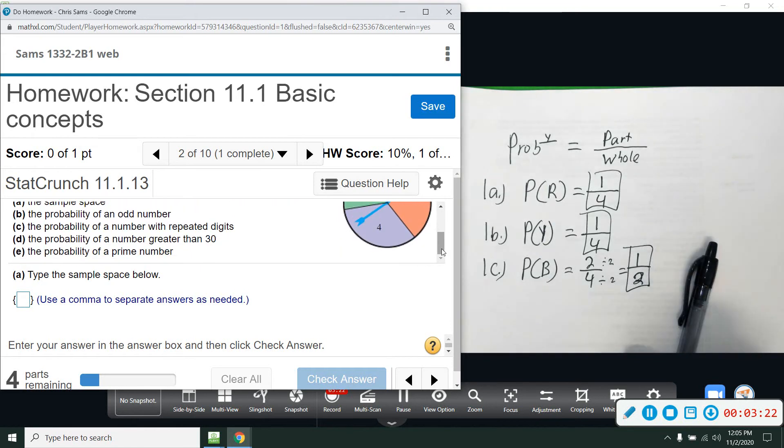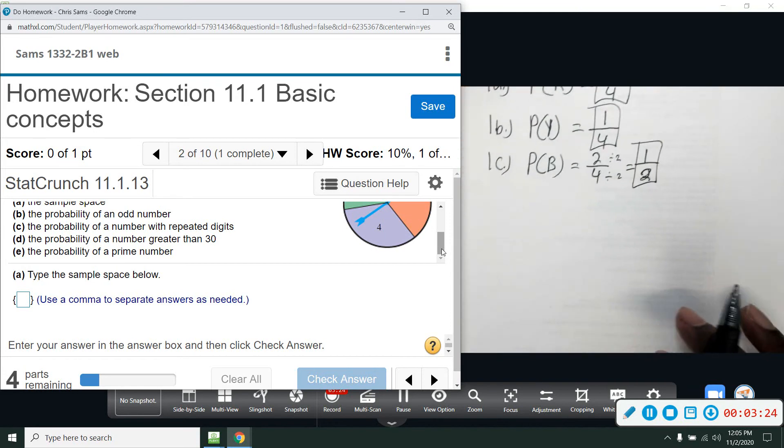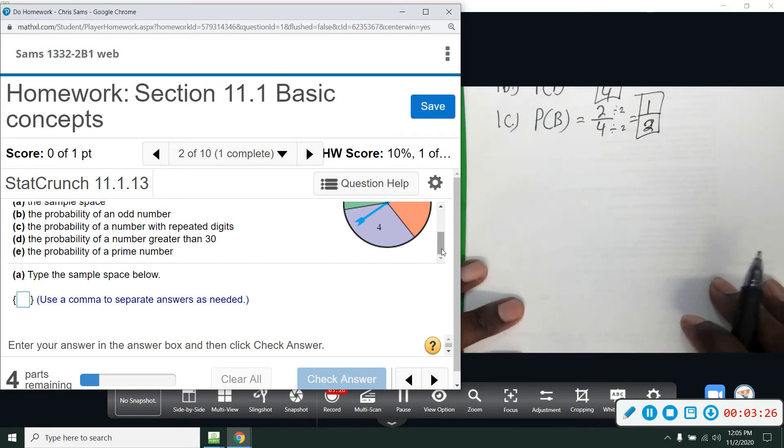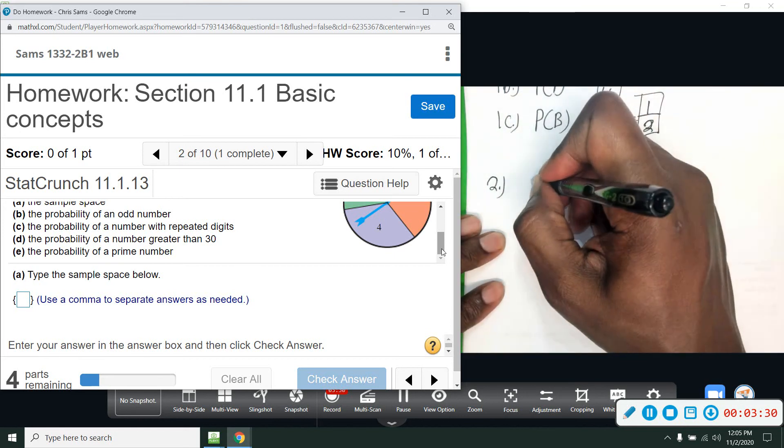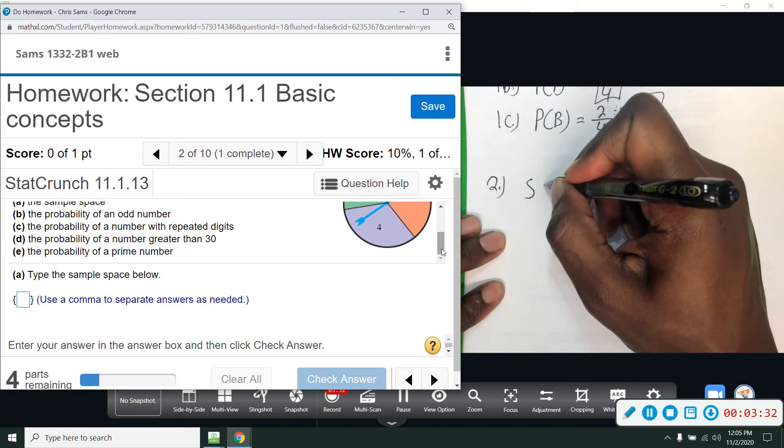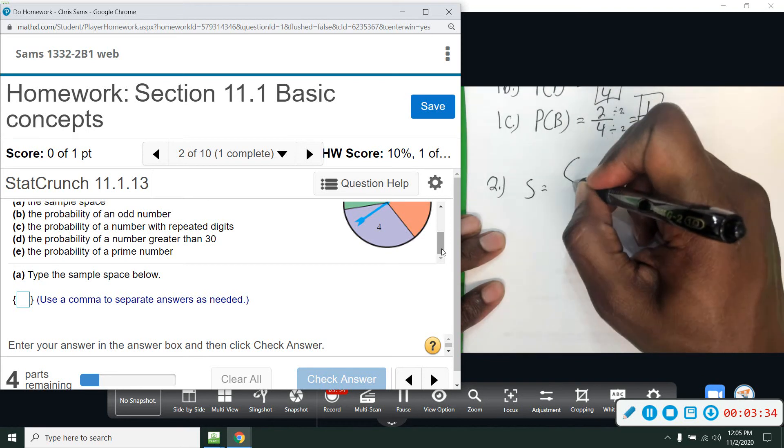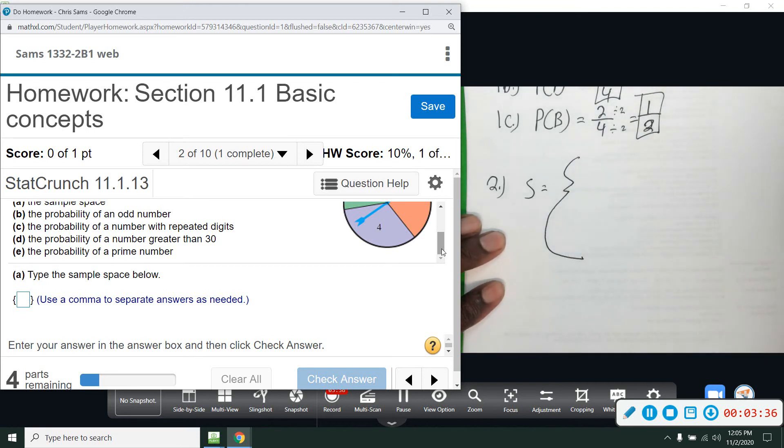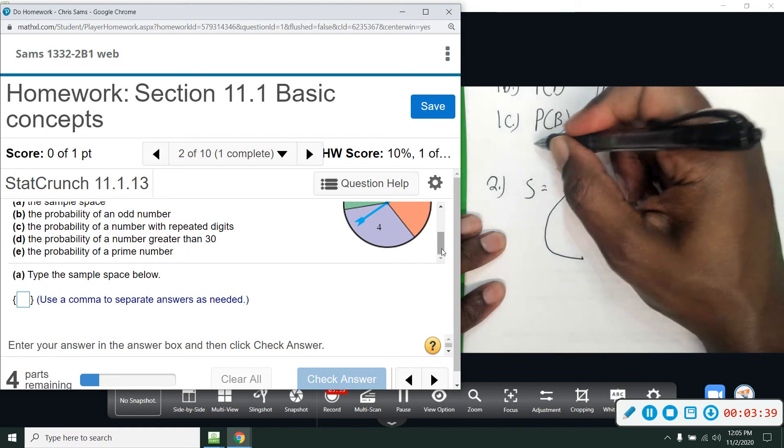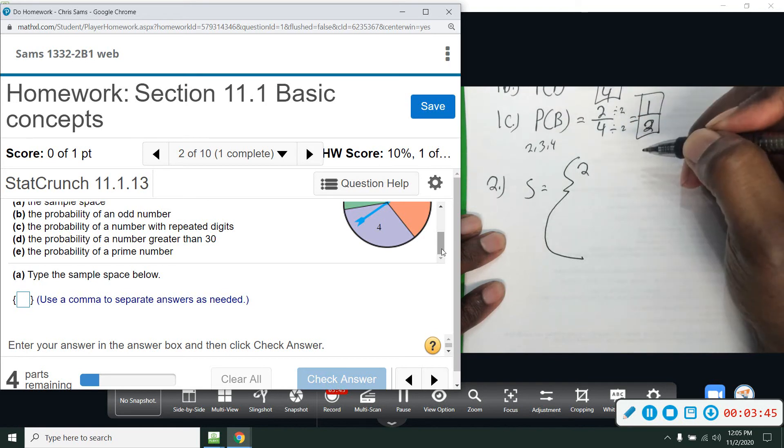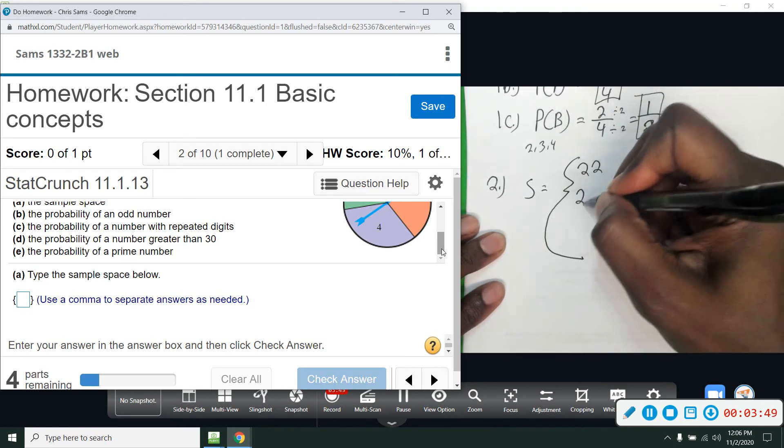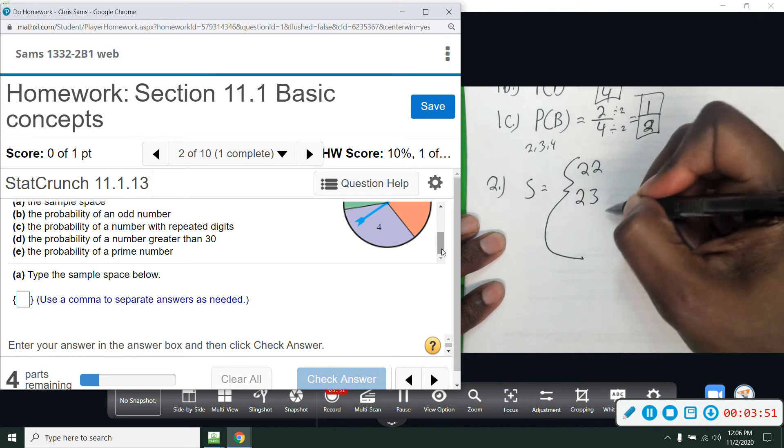When we do a sample space, we usually denote it with this letter S and we put the sample space in a curly bracket. So we're going to list everything that can happen. We have the numbers 2, 3, and 4. So if I roll a 2 on the first spin, I can also get a 2 on the second. I can get a 2 on the first and then a 3 on the second, or I can get a 2 on the first and a 4 on the second.